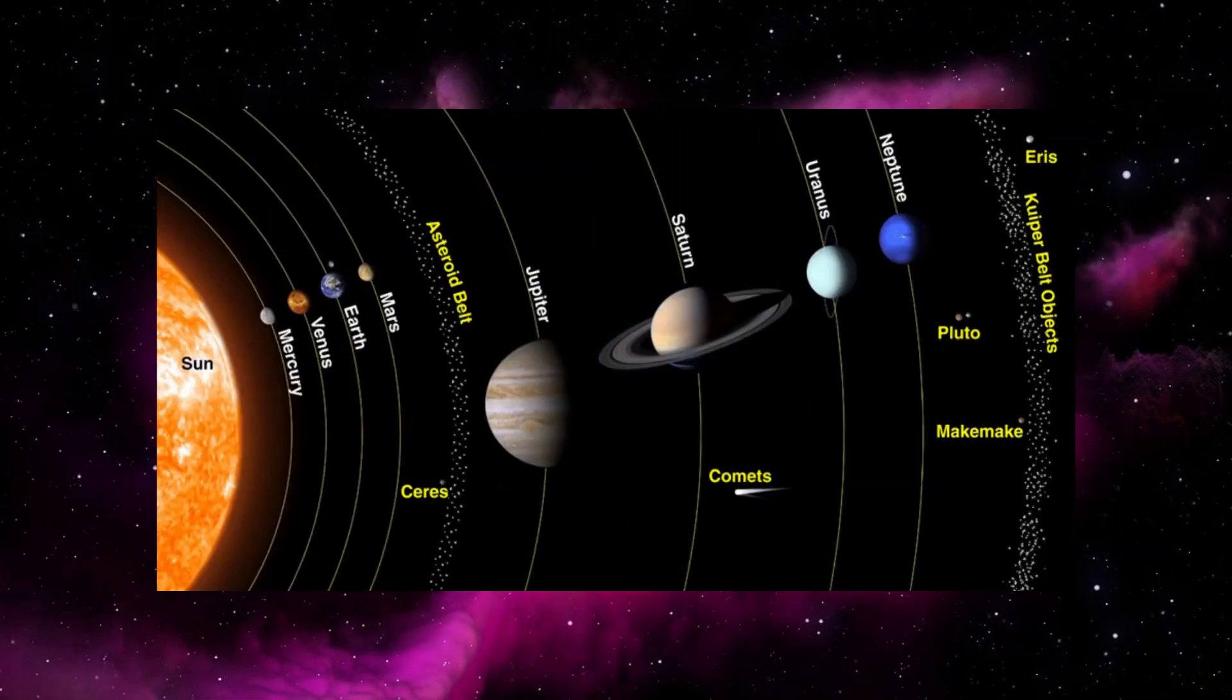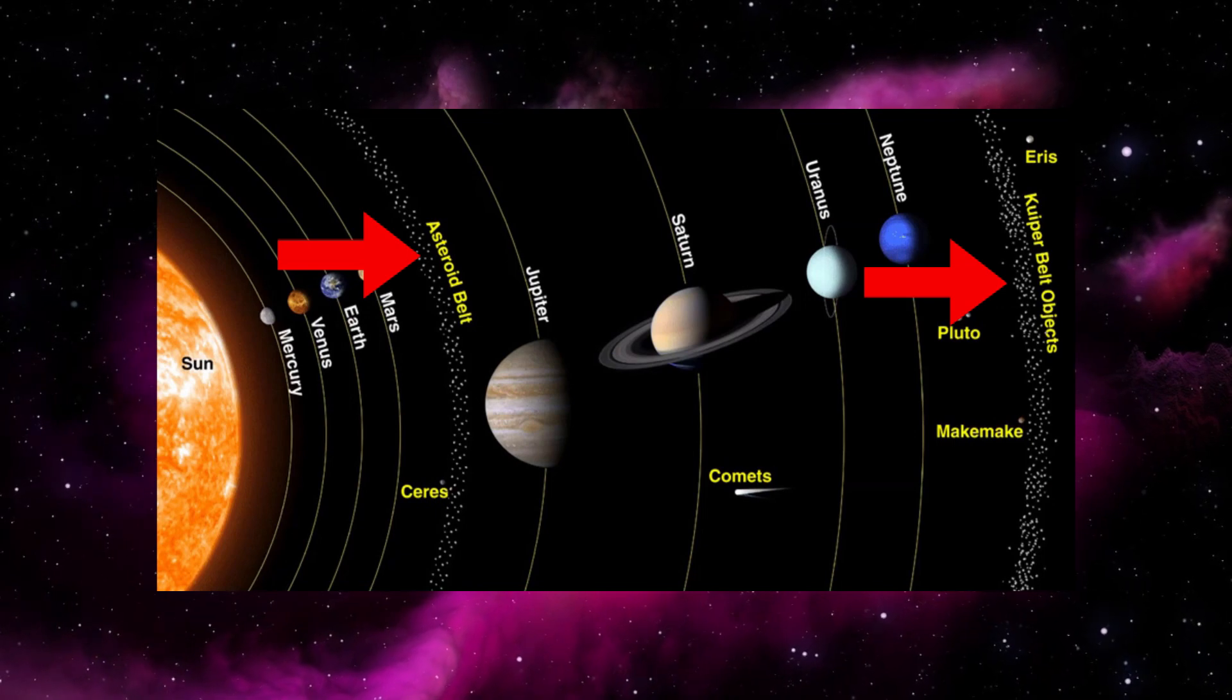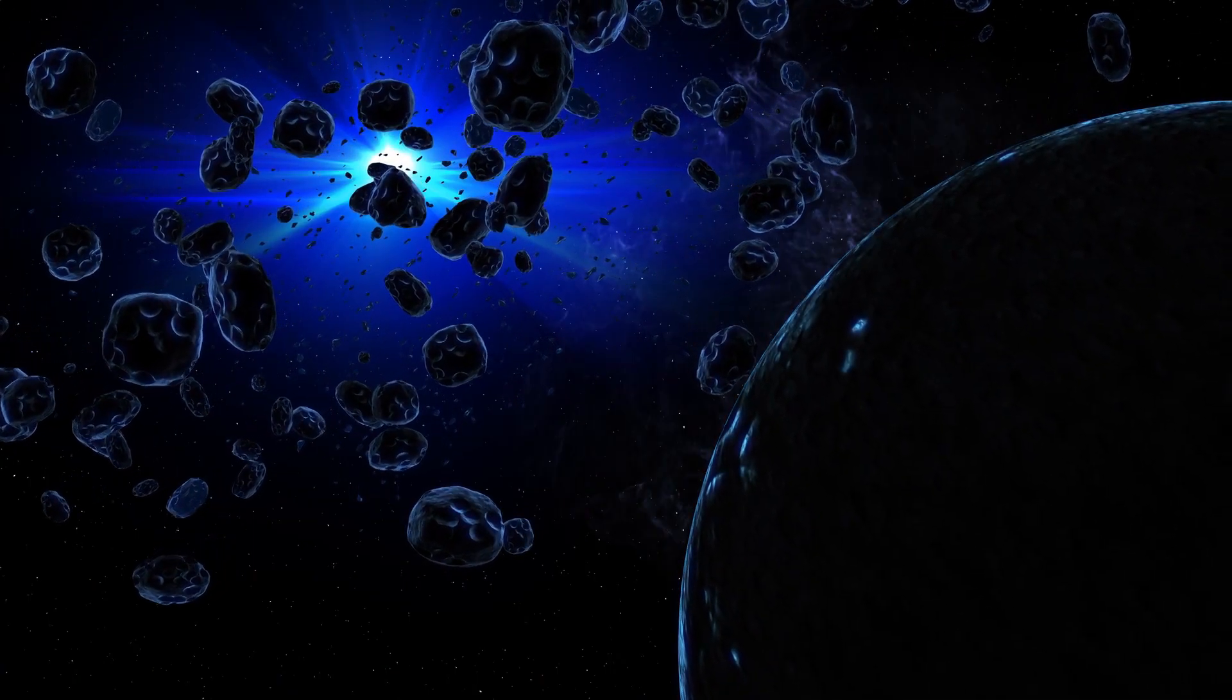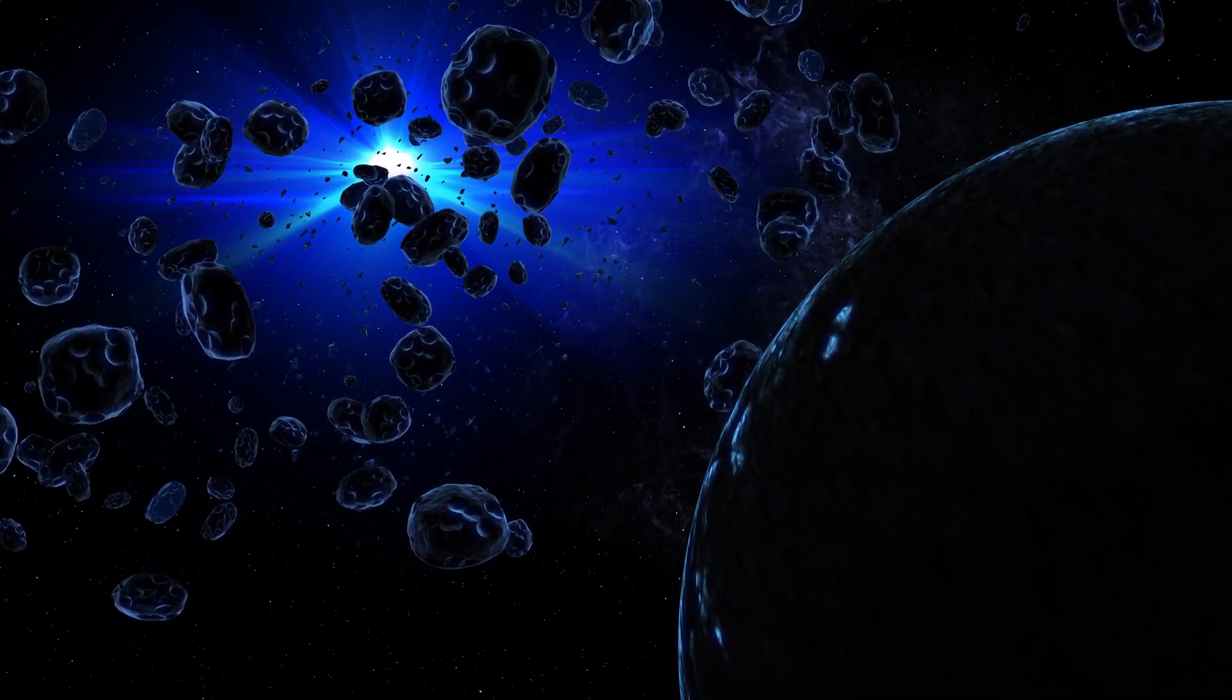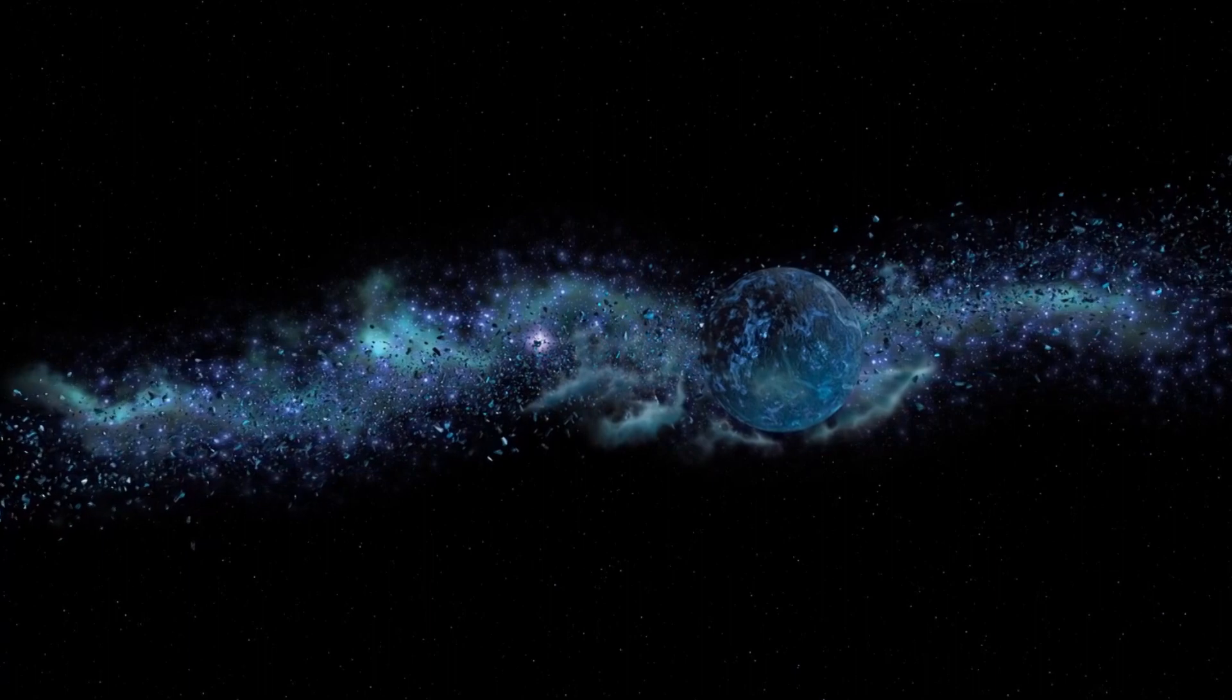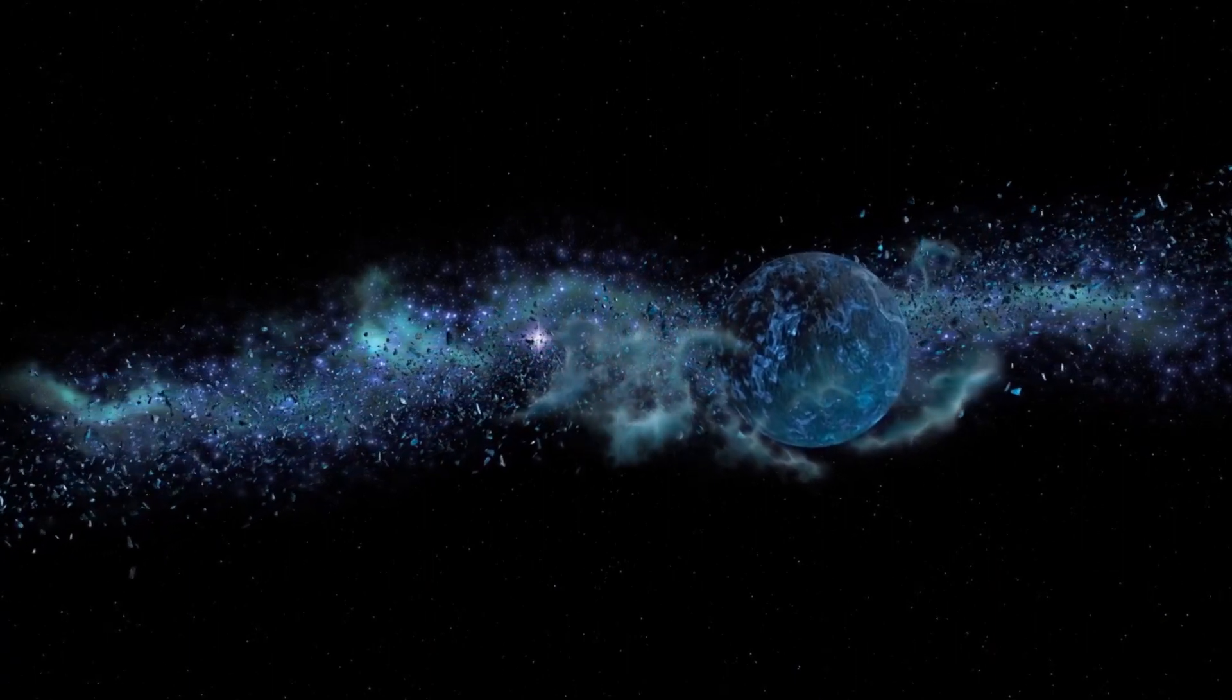These being the asteroid belt and the Kuiper belt. What has caused them to be unable to form a ninth and tenth planet, or are they still under formation? The main issue with formation in these areas is there is not enough mass.